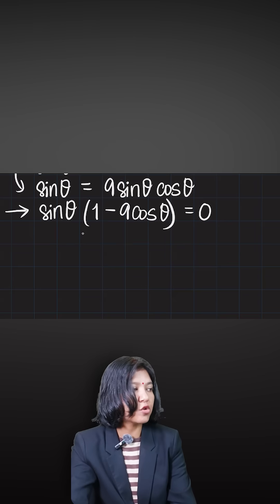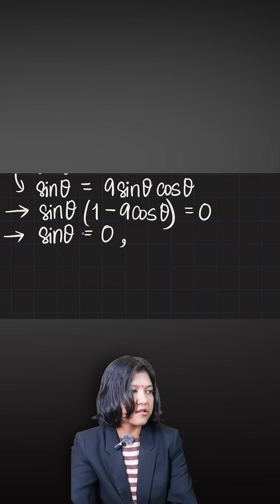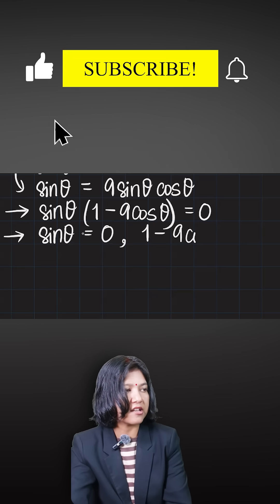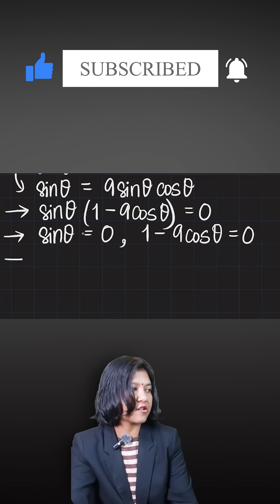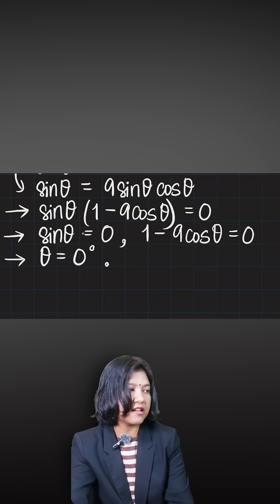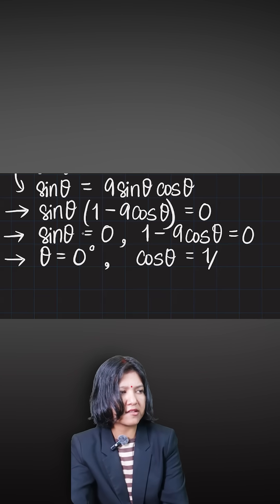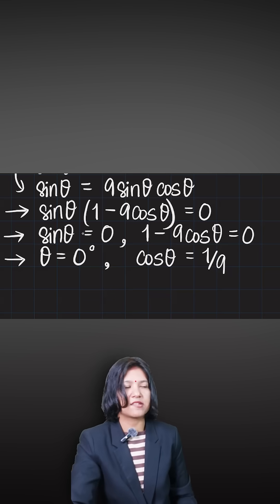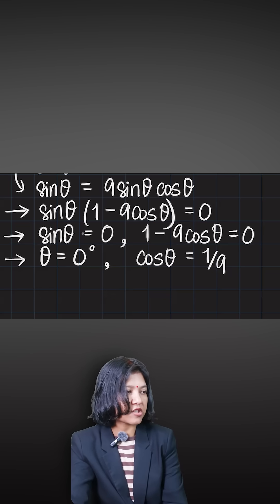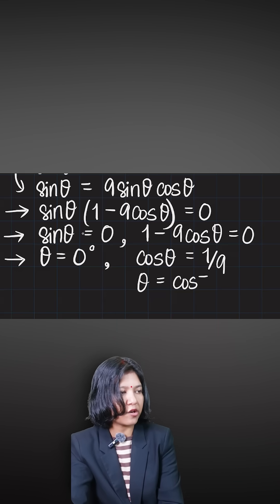Now I have two options: sin theta equals 0, and 1 minus 9 cos theta equals 0. Sin theta equals 0 gives theta equals 0 degrees. For cos theta, sending the 1 to the other side gives 1/9, so theta equals cos inverse of 1/9.